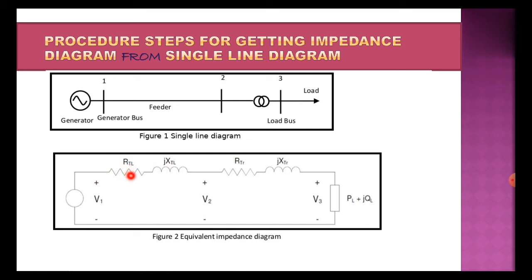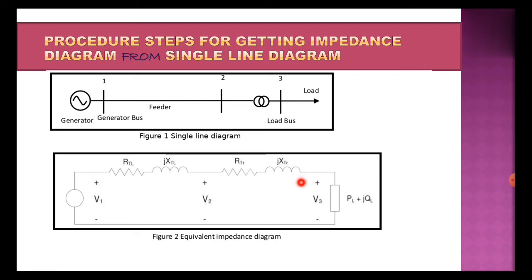Here the impedance is represented as R_TL plus jX_TL, where TL stands for transmission line. R_TL is the resistance part and X_TL is the reactance part — the entire quantity is the impedance of the transmission line. The transformer is also represented by its equivalent circuit element — the impedance comprising R_T plus jX_T, where R_T is the resistance part and X_T is the reactance part of the transformer impedance.